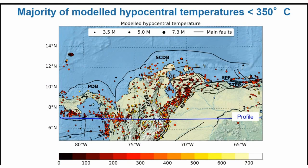Our results show the modeled hypocentral temperatures for crustal events only. The majority of events have modeled temperatures not exceeding 350°C. Although many events occur at less than 250°C, we can also see that there are some places where earthquakes are occurring at temperatures higher than 600°C, which I will discuss shortly.